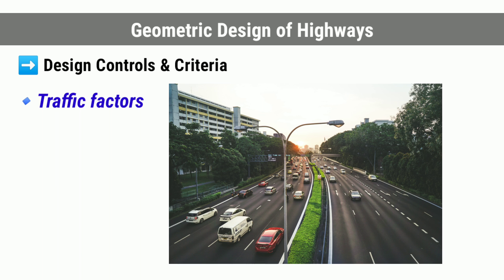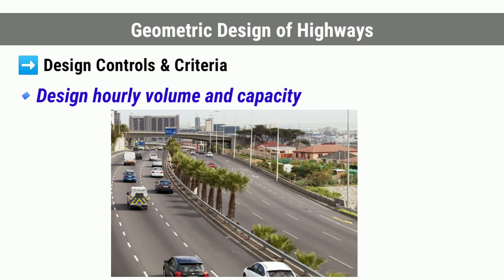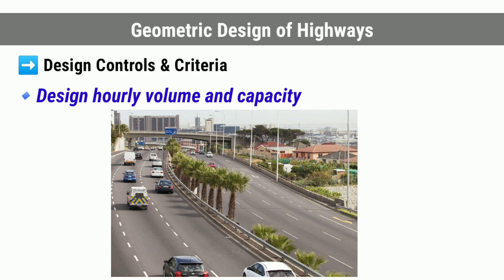These all come under traffic factors. Next, we see about design hourly volume and capacity. The traffic flow or volume keeps fluctuating with time, from a low value during off-peak hours to the high flow during the peak hours. It would be uneconomical to design the roadway facilities for the peak traffic flow or the highest hourly traffic volume. Therefore, a reasonable value of traffic volume is decided for the design, and this is called the design hourly volume. The ratio of volume to capacity affects the level of service of the road.